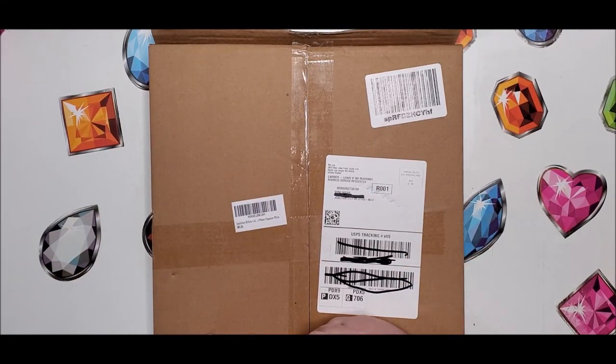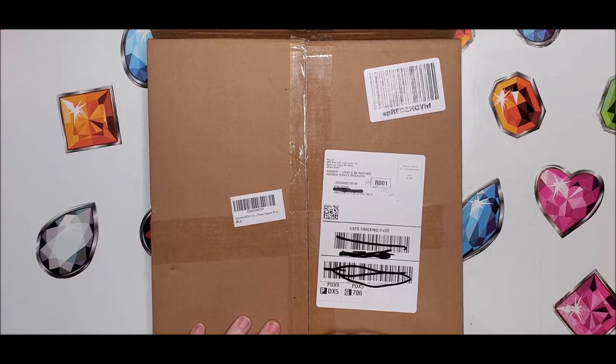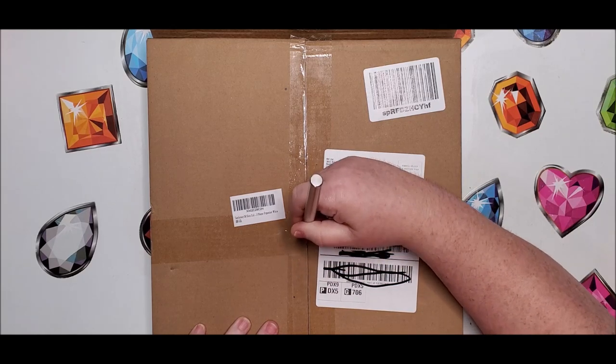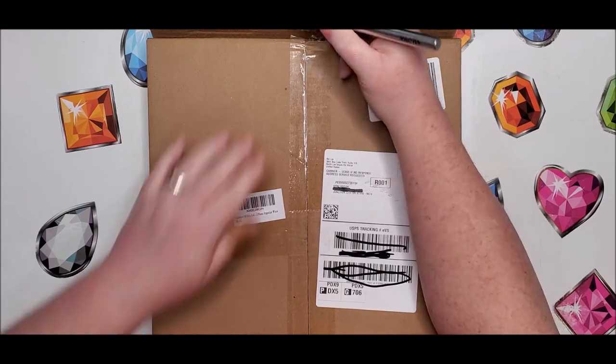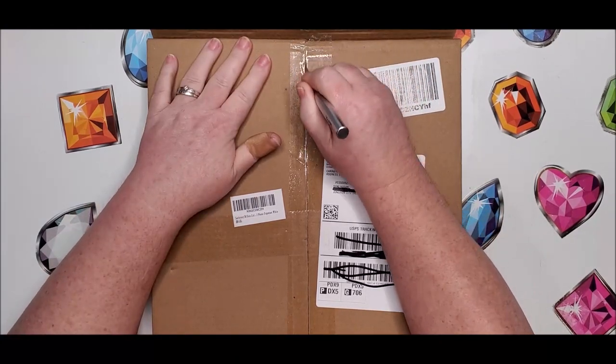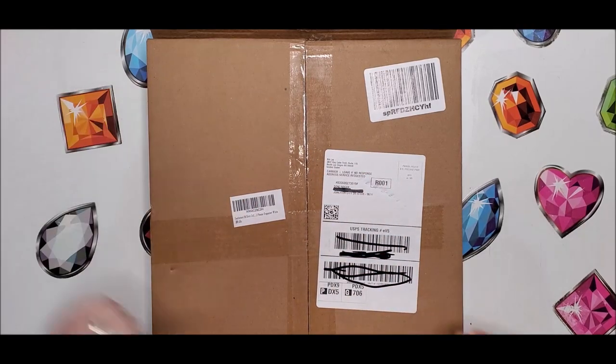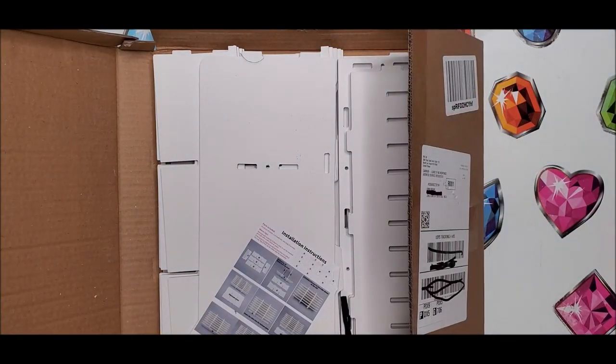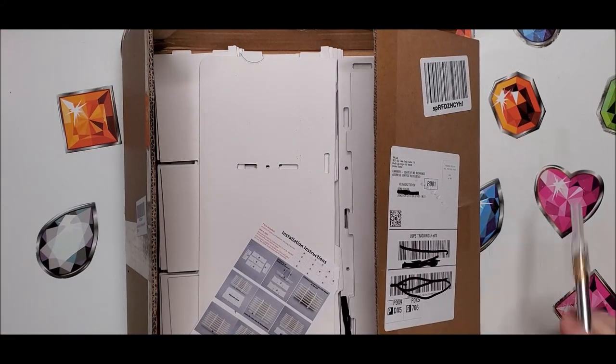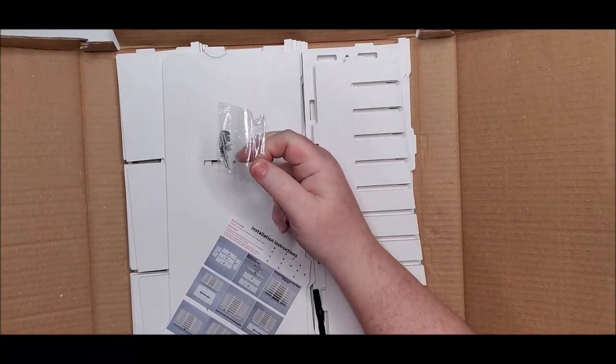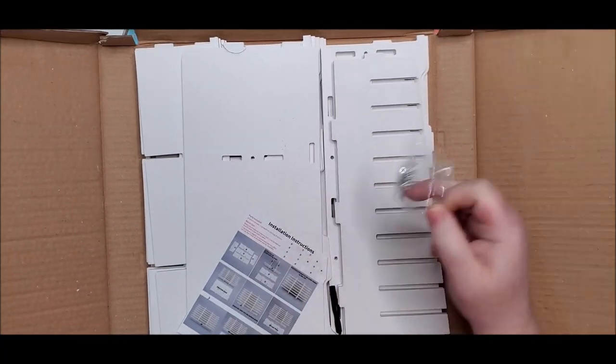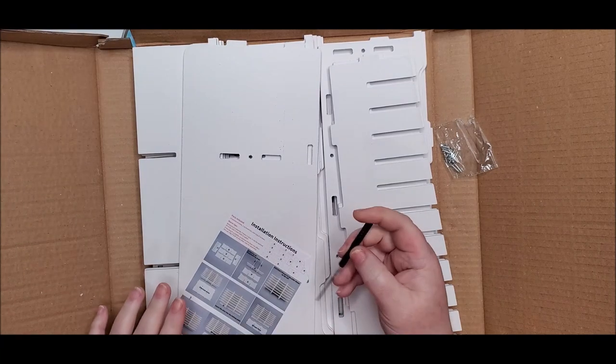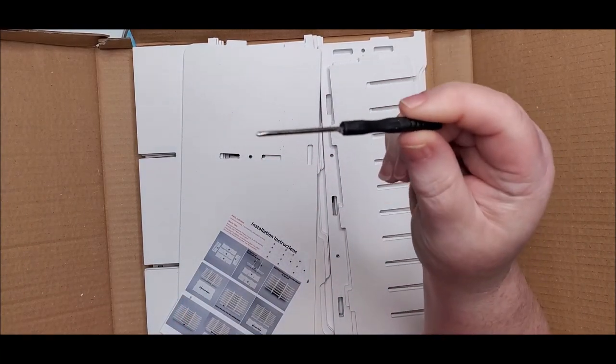I got it on Amazon and it is linked down below in the description section of this video. This is actually a cell phone organizer for like businesses that have a lot of cell phones for their employees and they need a place to store them. So it is made out of a wood-type material. I thought it was something that was just going to snap together, but apparently not, it has screws. So I'm going to be putting this together.